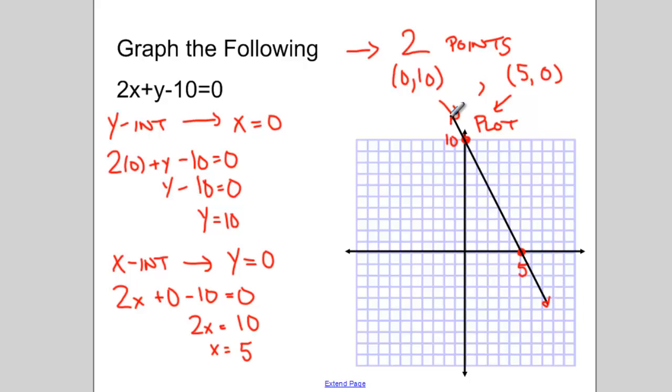And there's the graph of 2x plus y minus 10 equals 0. And we found that by finding the x and y-intercepts without having to rearrange it.